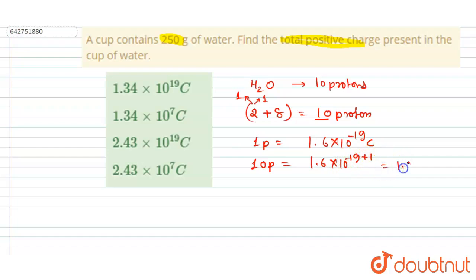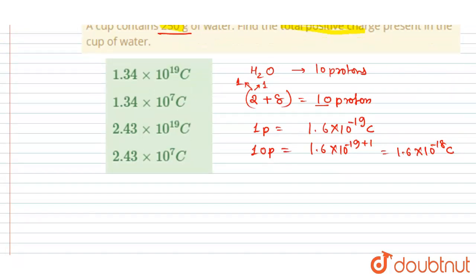Now let's find out the number of molecules present in 250 grams of water. We know that the molar mass of water is—the hydrogen molecule has a molar mass of 2 and oxygen is 16—so the total is 18 grams per mole.